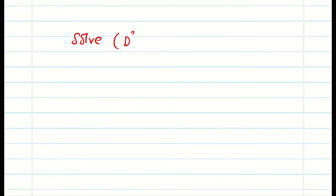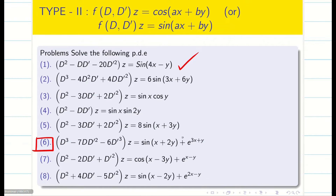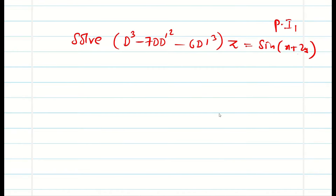I am going to take only the PI that is required. The second one is very simple — you can do it by yourself. The equation is d³ + 7dd'² - 6d'³ applied to z equals sin(x + 2y). I am going to consider only PI₁ because PI₂ is very easy. I will solve this problem in two different types: first the classical way, second the alternative shortcut method — whichever you like you can use.